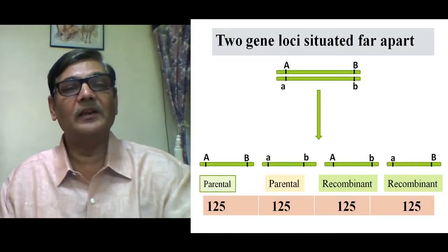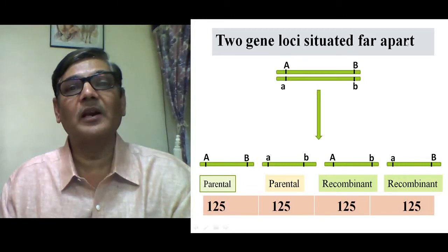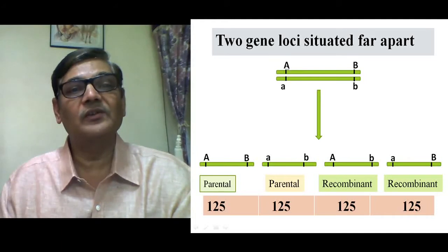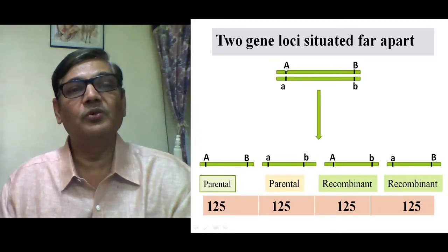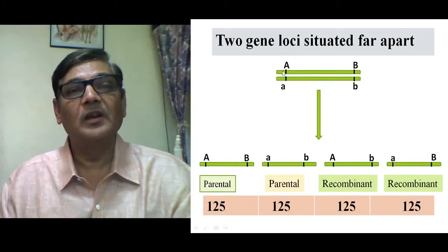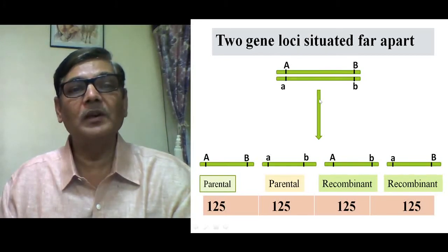Consider a diagram where two gene loci A and B are situated far apart on a chromosome — almost at the terminal ends. Gene A is expressed in two alternate forms: capital A and small a. Gene B is also represented as capital B and small b. Since they are substantially far apart, there will be enough crossing over — at least 50% — between them. As a result, all types of gametes will be in equal proportion.